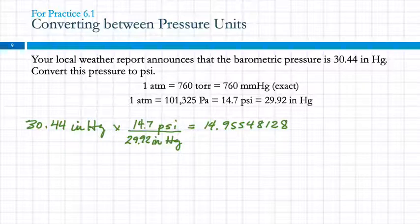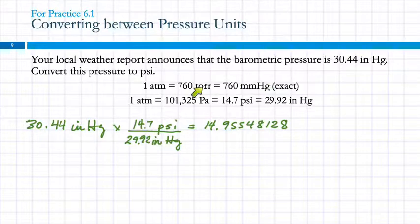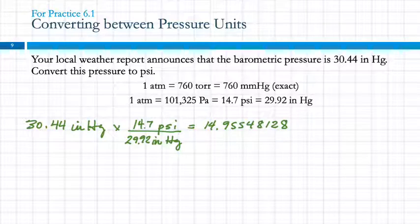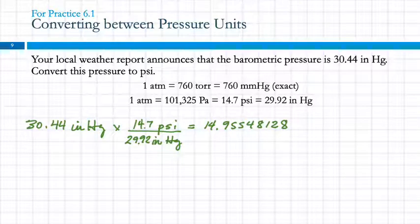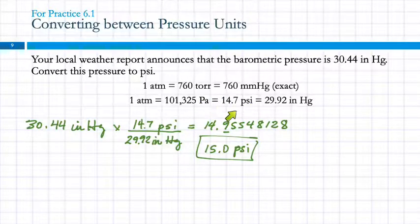How many significant figures should we keep? Three — because 14.7 has three sig figs and is not an exact relationship. The 760 is exact, but 29.92 and 101,325 are not. With three and four sig figs in the conversion, the answer should have three sig figs: 15.0 PSI. The book uses 14.7 instead of 14.69, which is a bit frustrating.